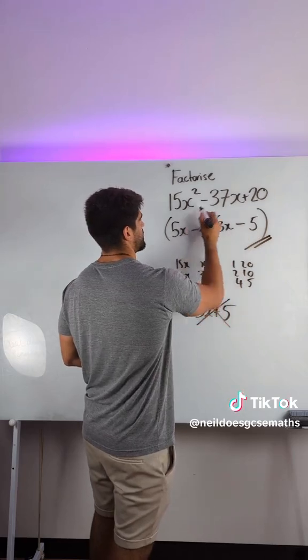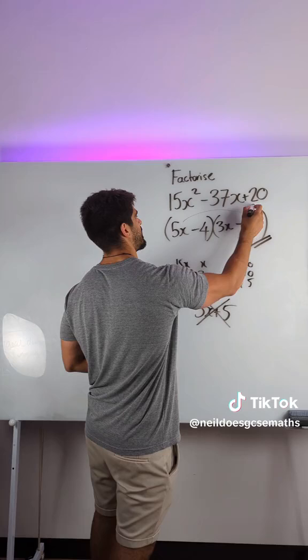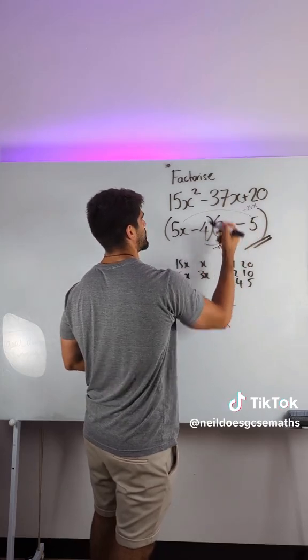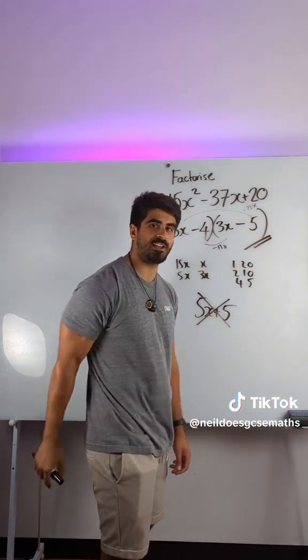Check it. That gives me minus 25x here and this gives me minus 12x. Minus 25 minus 12 gives you minus 37 and that is factorised nice.